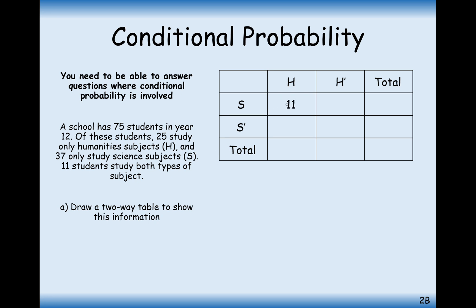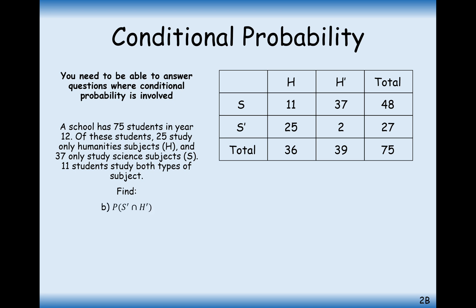So 11 students study both science and humanities subjects. 25 only study humanities, not science. 37 study science but not humanities. We know the totals must add up to 75 in both directions, so this number must be 2 — making this column add up to 27, and this column add up to 39 as well.